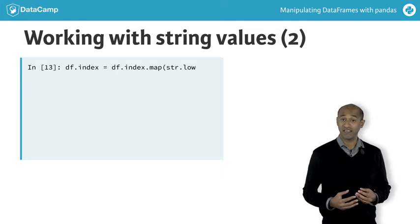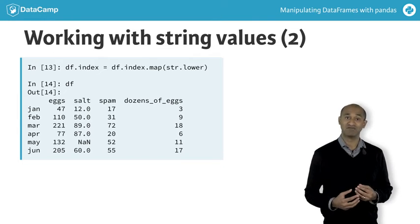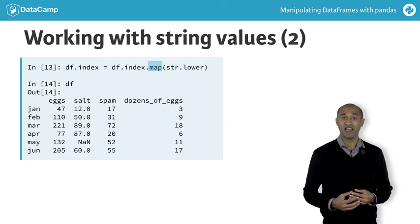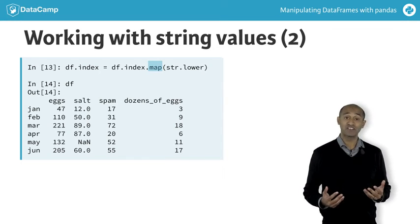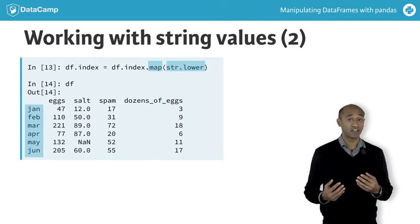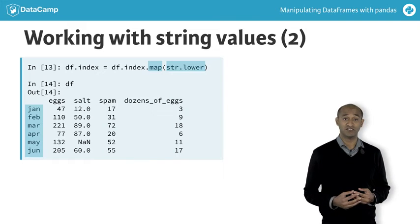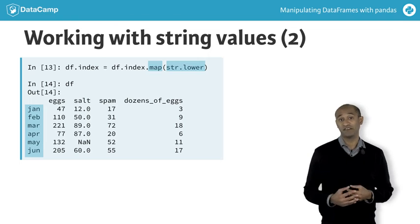For the index, there is no apply method. For the index, the relevant method is called map — an unfortunately different terminology. Thus, we can apply, say, str.lower or a custom transformation to the index element-wise using the map method instead.